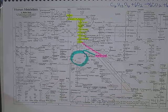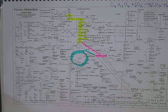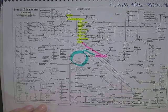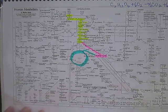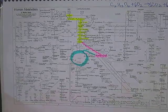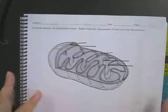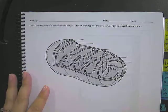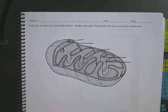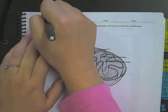In order to understand what's going on here, we need to know a little bit more about the structure of the mitochondria. On page 203 is this image here, and we're going to label the structure of the mitochondria.